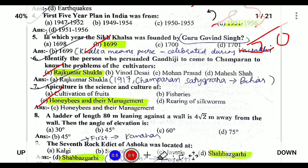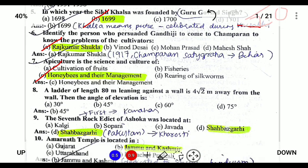Apiculture is the science of honeybees. 'Api' is related to bees and honeybees, while fisheries is known as sericulture — sorry, fruits is horticulture, and sericulture is related to silk.